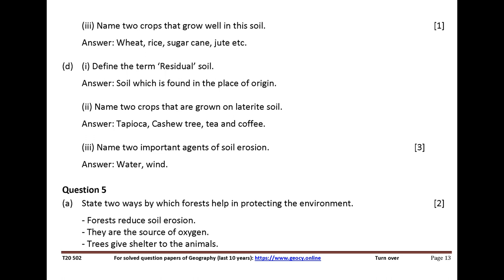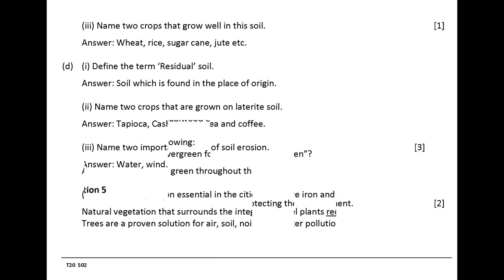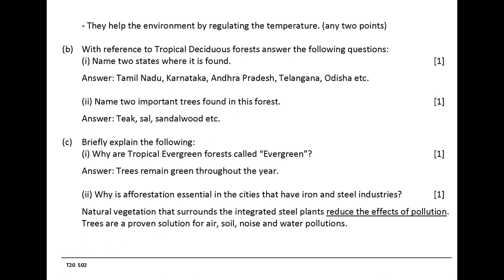Question 5. State two ways by which forests help in protecting the environment. Forests reduce soil erosion. They are the source of oxygen. Trees give shelter to animals. They help the environment by regulating the temperature. Any two points.